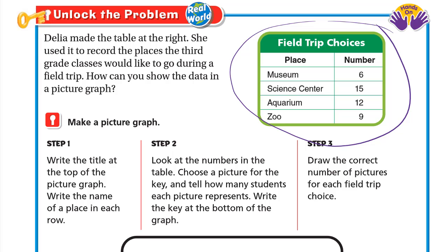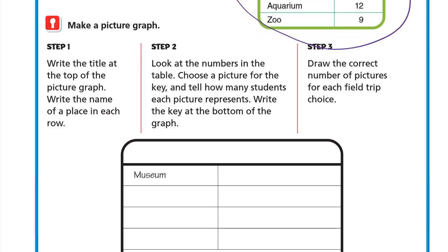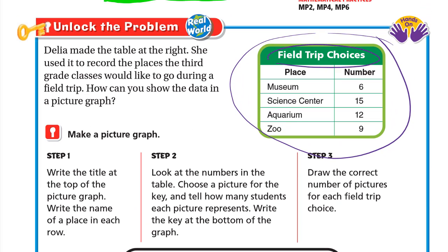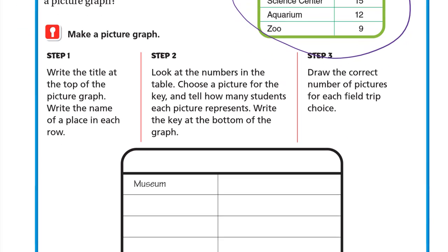Let's make the picture graph. Step number one: write the title at the top of the picture graph and write the name of a place in each row. Here the title is Field Trip Choices, so we write Field Trip Choices.